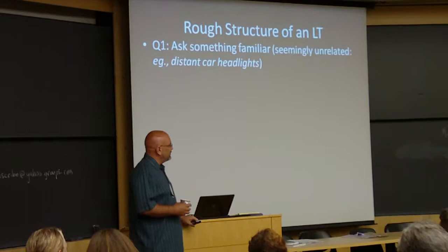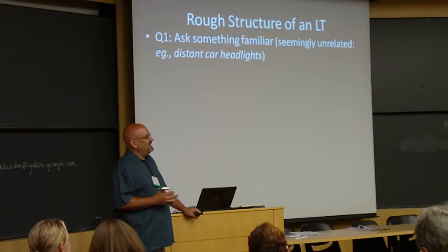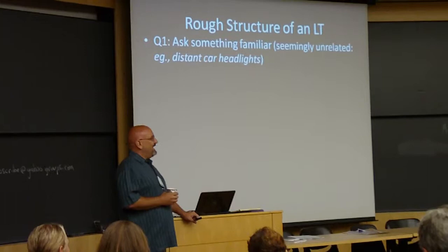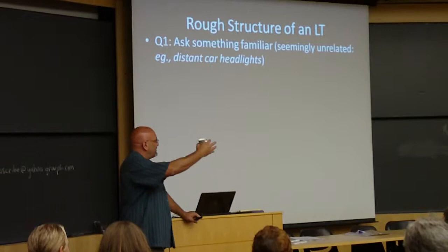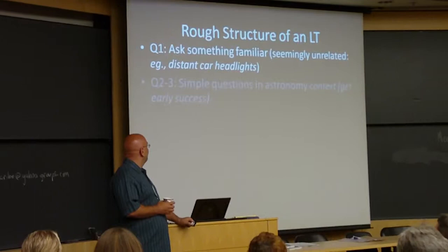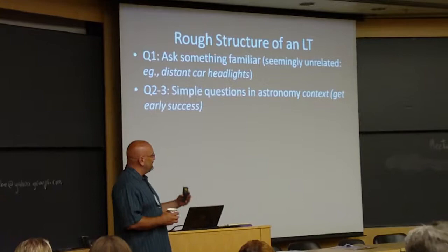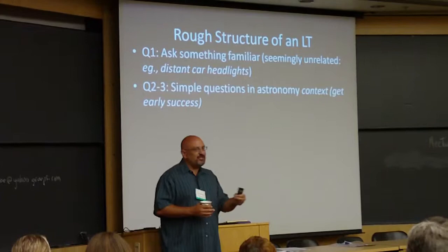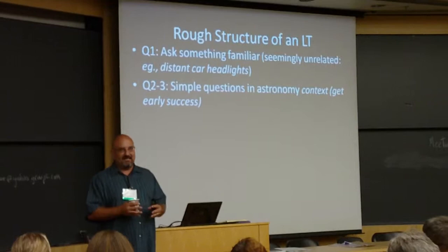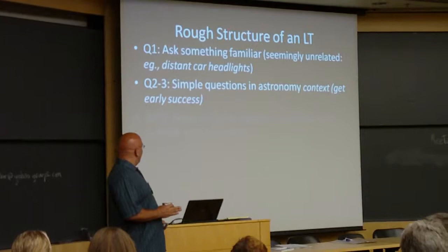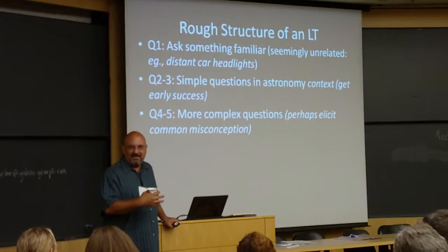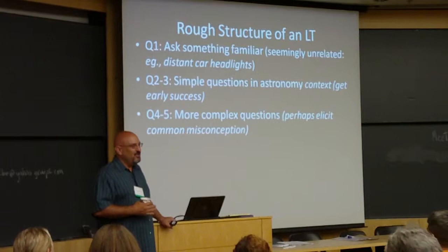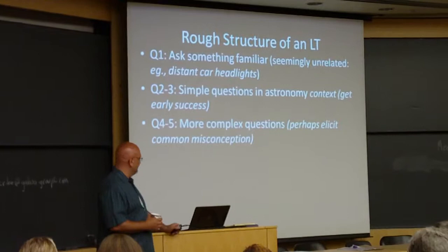The first thing we often do is ask students about something familiar. For example, if we're talking about issues related to distance and luminosity and brightness, you might start by asking students about something seemingly unrelated — like, have you ever been outside and watched cars coming over the horizon? You ask them some questions about that, then connect to astronomy. In this office-hour scenario, you ask them some simple questions that you're pretty sure they can answer correctly, so that they have some early success and don't immediately say, I clearly can't understand it. Then you ask your key question — you intentionally elicit the misconception, encourage them to say the wrong answer.